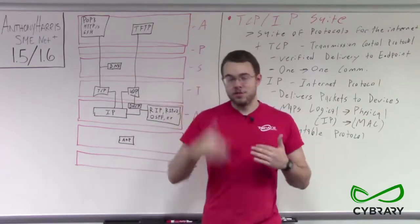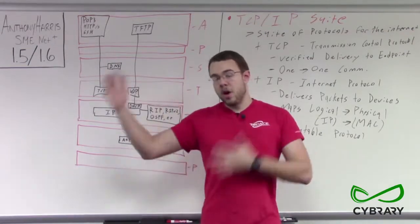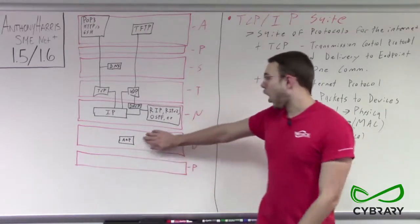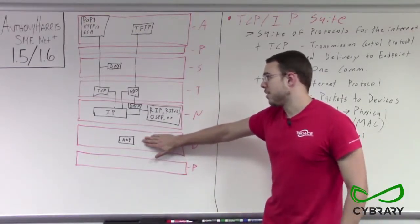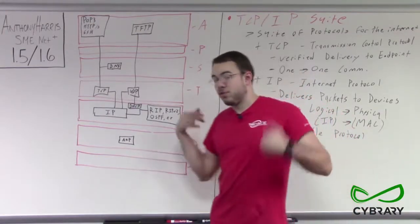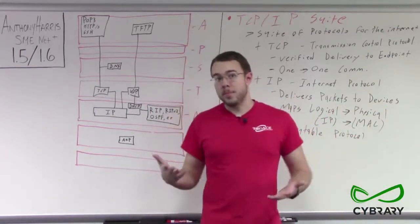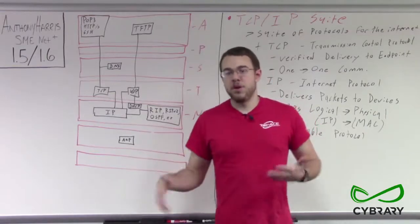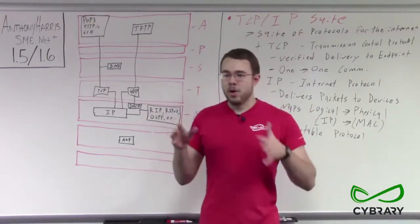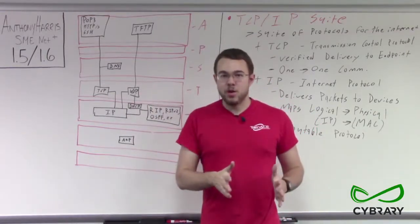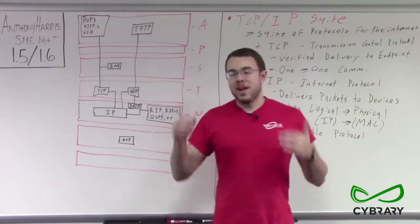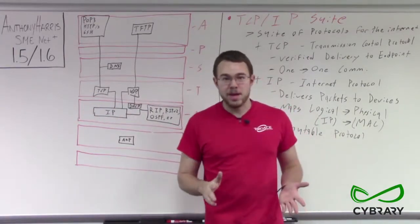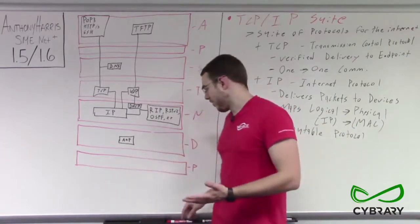ARP maps those IP addresses to those MAC addresses — those network layer addresses to those data link layer addresses. We have our ARP protocol working in our TCP/IP suite because without Address Resolution Protocol, our computers would have a much harder time figuring out what MAC address a given IP address corresponds to — what exact network interface card number that IP address means. That's what ARP does.